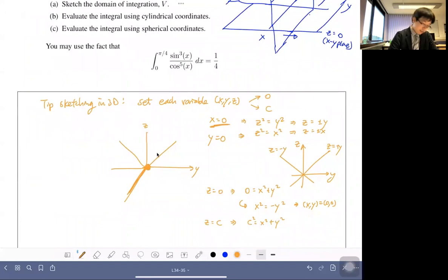So if z equals some constant, then I will get a circle, right? On the xy plane, being of radius c. And you can see that this is actually z, right? So as z increases, it's basically increasing the radius of this, right?